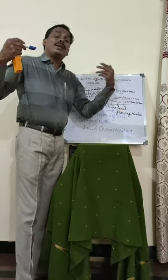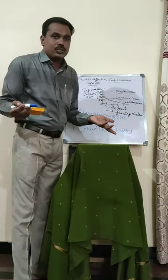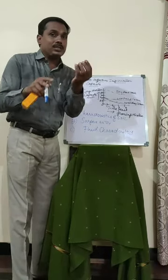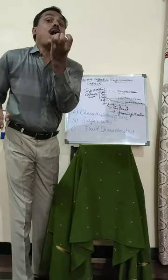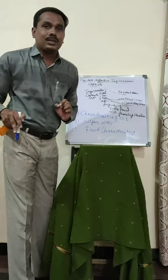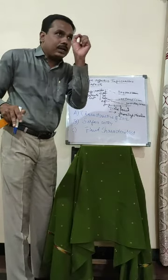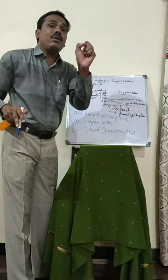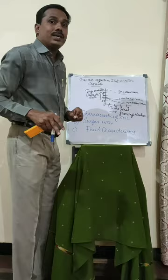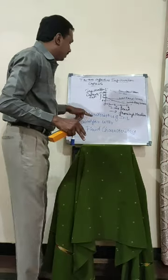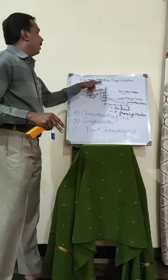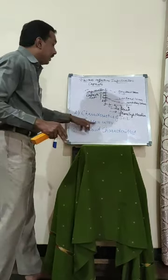The texture is also very important. What is texture? The external appearance means the amount of water absorption by that particular soil. Different types of soil have different pore sizes — what we call void spaces. So the characteristics of the soil is one of the important factors affecting infiltration capacity.